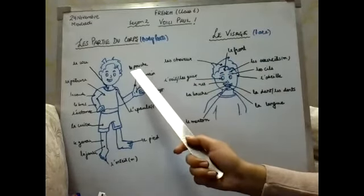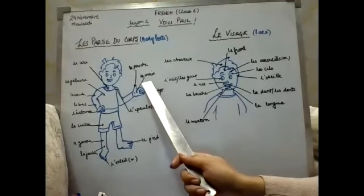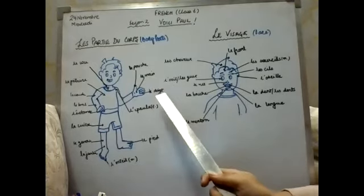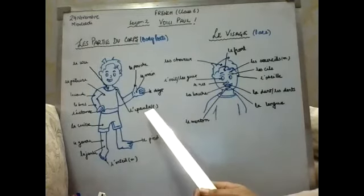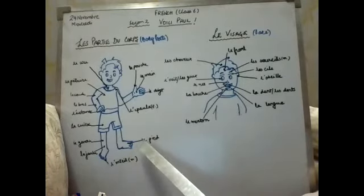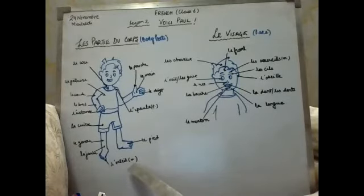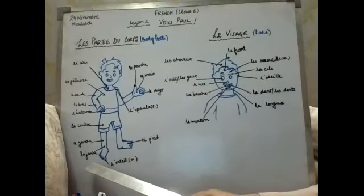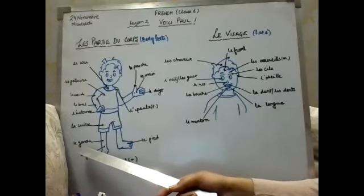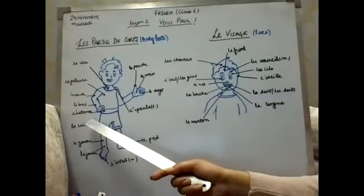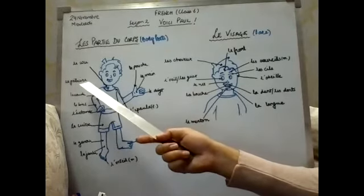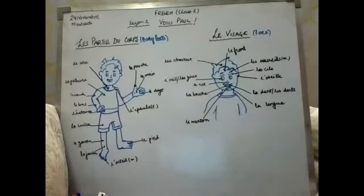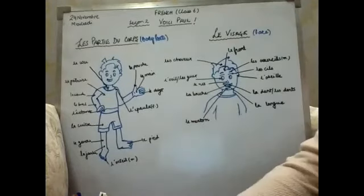First we will pronounce, then we will see the meanings. Le main, please repeat — le main, le doigt, l'épaule, le pied, le orteil, la jambe, le genou, la cuisse, l'estomac, le bras, le coude, la poitrine, le cou.